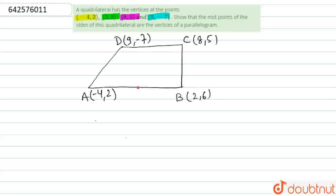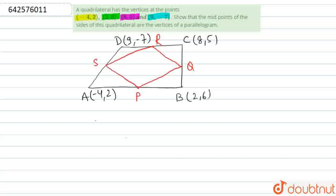Let us suppose that P is the midpoint of AB, Q is the midpoint of BC, R is the midpoint of CD, and S is the midpoint of AD. When we join these points, it will form a quadrilateral. We have to prove that PQRS is a parallelogram.